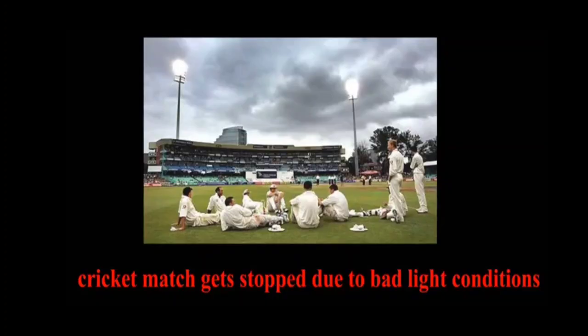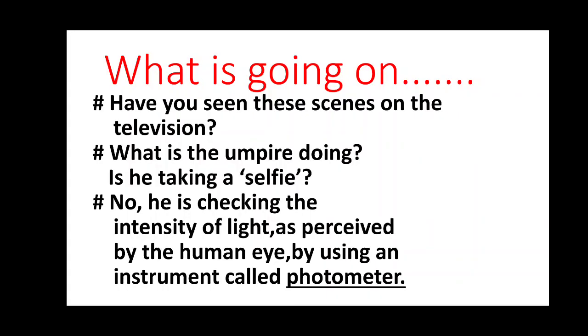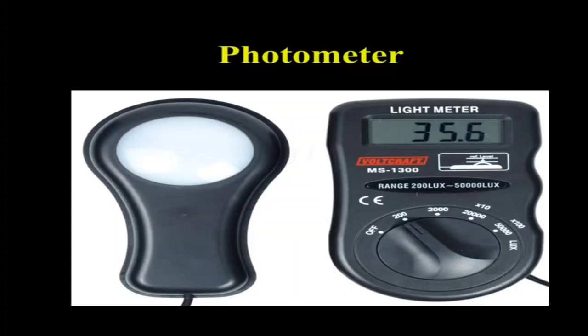See this picture — a cricket match gets stopped due to bad light conditions. Have you seen these scenes on television? The umpire is checking the intensity of light as perceived by the human eye, using an instrument called a photometer. It is also called a light meter or light intensity meter.